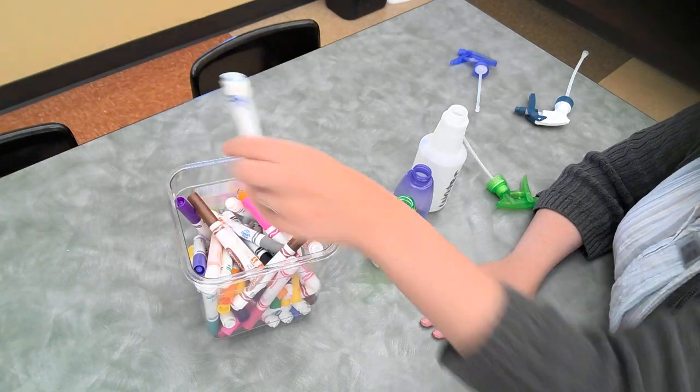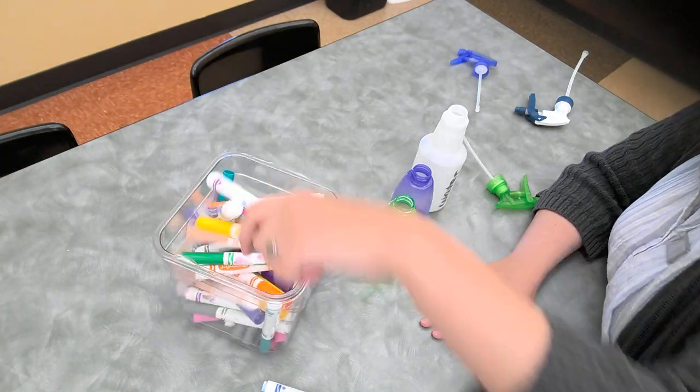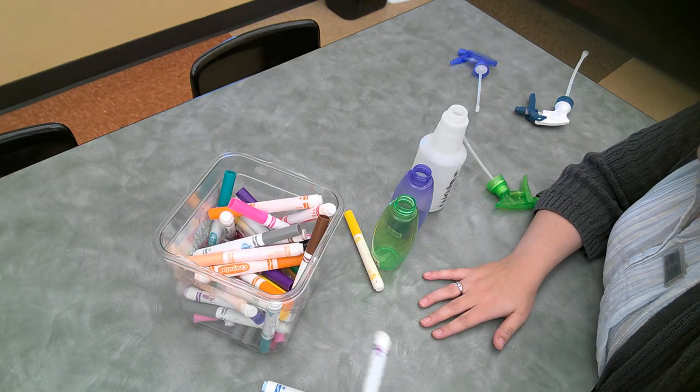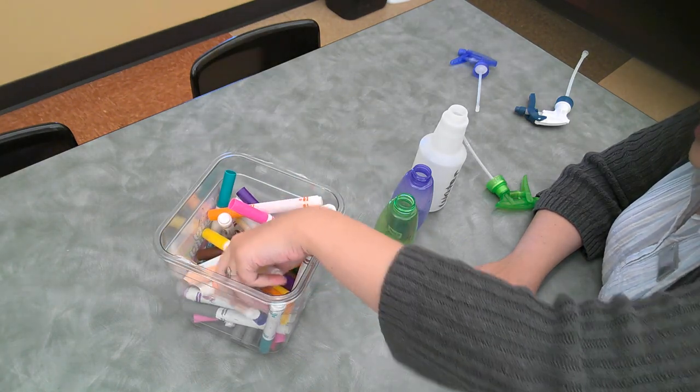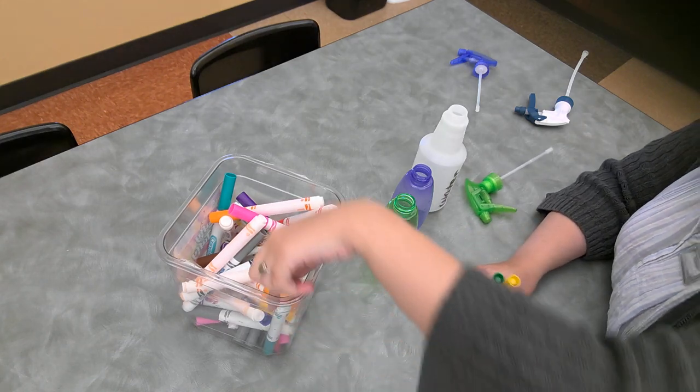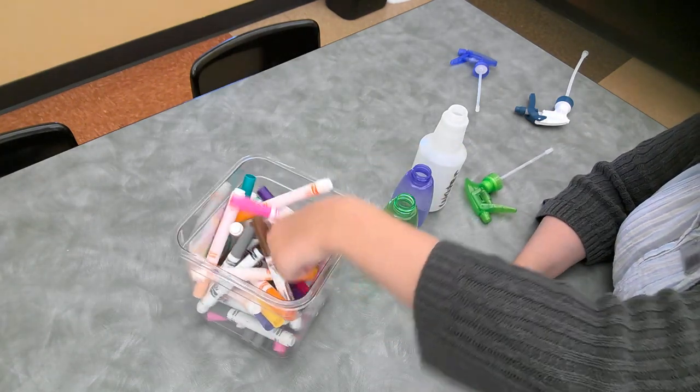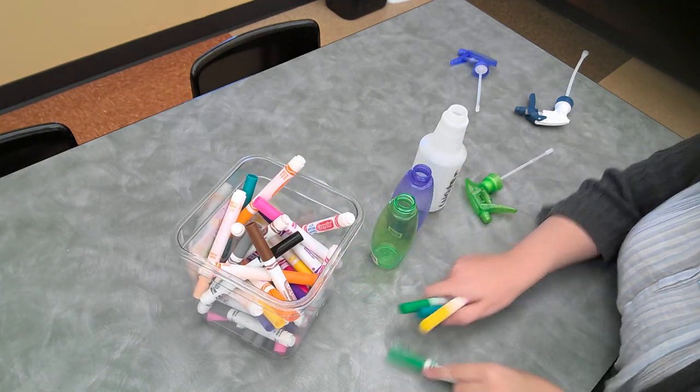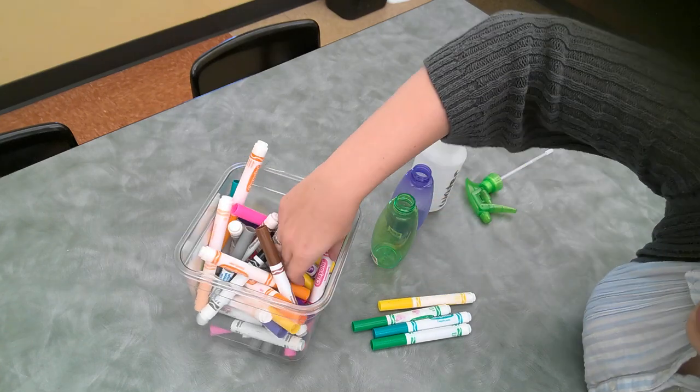So what I'm gonna do is I'm actually gonna pick out some colors. So my blue bottle will have some blue markers. My green will have kind of greenish markers. And then clear can have red and pink.